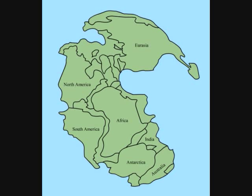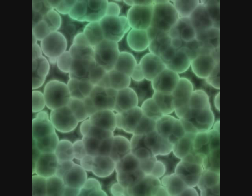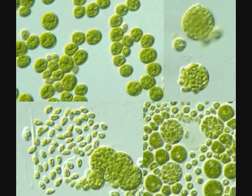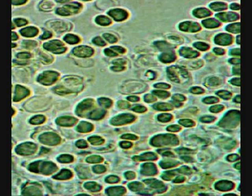The earliest living organisms were microscopic bacteria, which showed up in fossil records as early as 3.4 billion years ago. Algae are single-celled, plant-like organisms, which were the first to carry out the process of photosynthesis, used to make up the Earth's atmosphere. Cyanobacteria are the first algae to carry out the process of photosynthesis. They still exist today, and have changed very little from when they first developed.